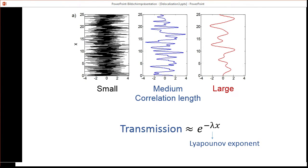In general, we can evaluate the transmission, which will decay exponentially with some decay rate, which we call the Lyapunov exponent and term lambda.